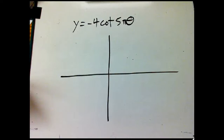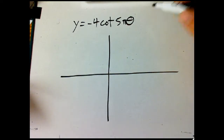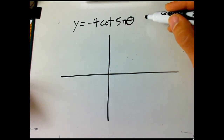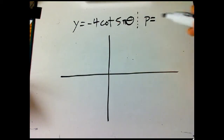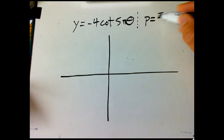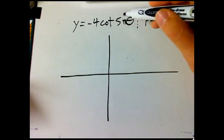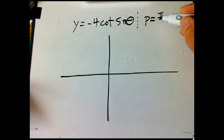Here's an example of graphing one of the other four trig functions: y equals minus 4 cotangent 5π·θ. The first thing to deal with is the period. For cotangent, it's different — it's π over b, over whatever you see there. So π over 5π is one-fifth. That's the period.